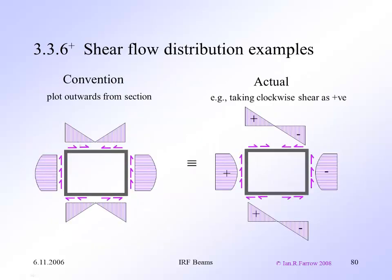Just a quick note about these diagrams. The convention is to plot the shear increasing in magnitude outwards from the section. So for this box section, even though in reality we have a positive shear flow here and a negative shear flow here, you'll plot them both going outwards and make sure you indicate the sense of the shear with the arrows along the section.